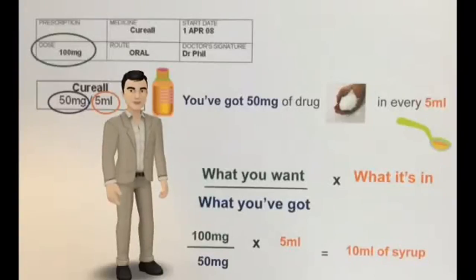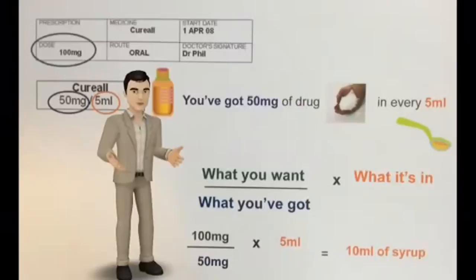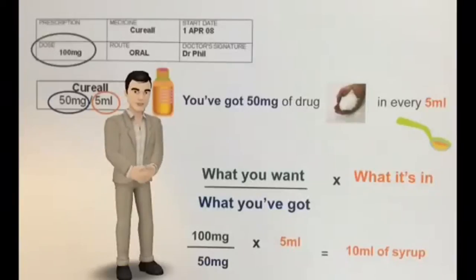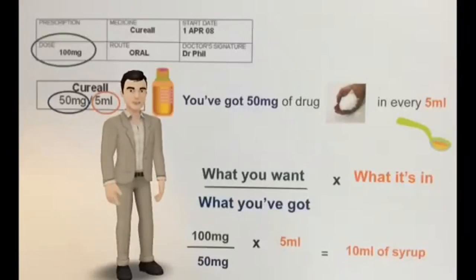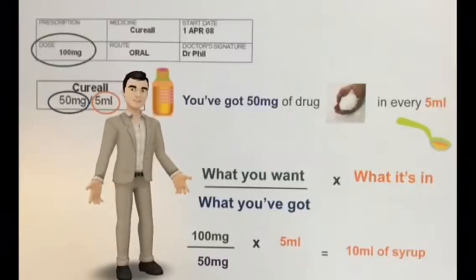Your patient has been prescribed 100mg of cure-all, available as a syrup at 50mg per 5ml. This means you've got 50mg of drug in every 5ml, so you could give them 2 spoons worth, which would be 10ml. Or use the formula: what you want over what you've got times what it's in. 100mg divided by 50mg, times 5ml, equals 10ml of syrup, or 2 five-millilitre spoonfuls.